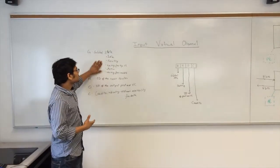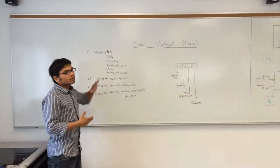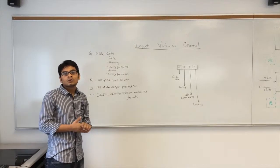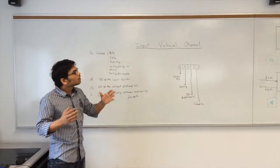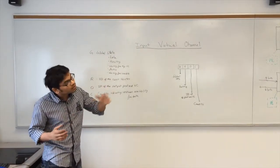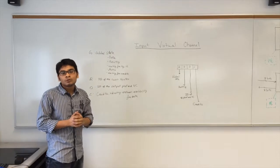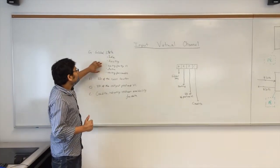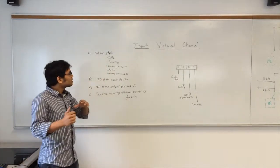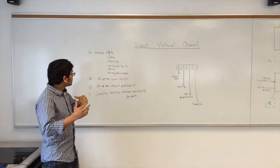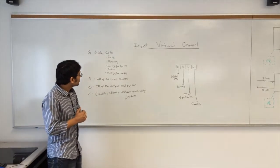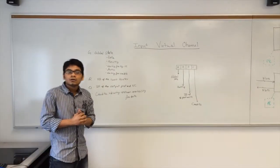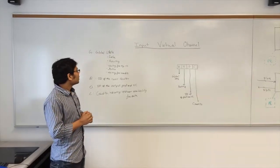At this stage, the virtual channel requests the virtual channel allocator to allocate a virtual channel at the output port for this particular packet, and it gets back the information from the virtual channel with the ID of the virtual channel at the output port.